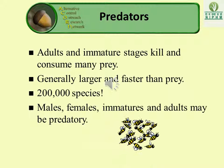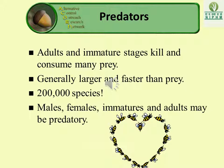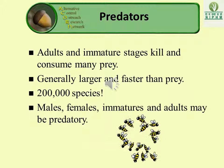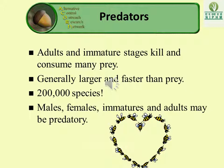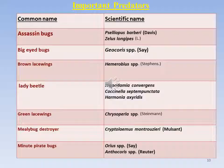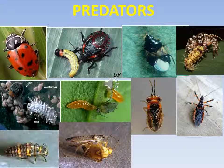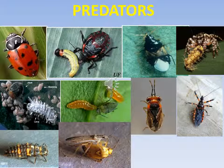Predators — adults and immature stages kill and consume prey. In their life cycle they consume many prey items. Generally, predators are larger and faster than the prey because they have to catch them. There are 2 lakh species of predators present in nature; males, females, immature, and adults may all be predatory. Important predators include assassin bugs, beguid bugs, brown lacewings, lady beetles, green lacewings, mealybug destroyers like Cryptolaemus, and minute pirate bugs. These naturally present predators help in biological control by controlling crop pests.